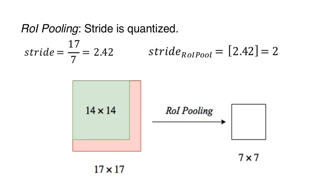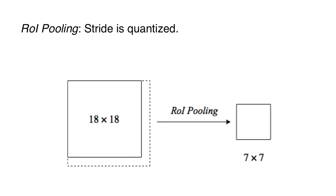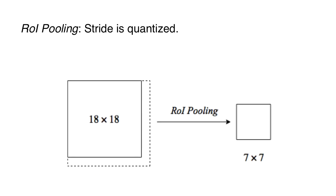Not only is there a loss of data, but this can also lead to misalignment. If we use an 18 x 18 input and map it to a 7 x 7 output, the required stride becomes 2.57. This rounds up to 3 in ROI pooling. You can see that there is a misalignment when we perform pooling here.